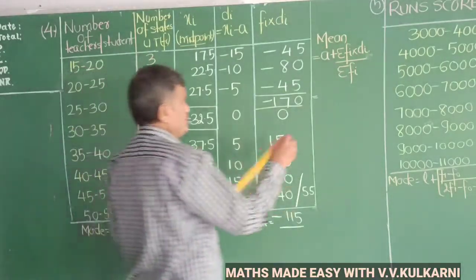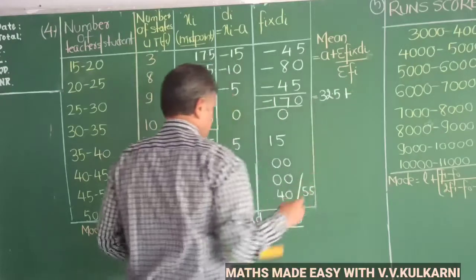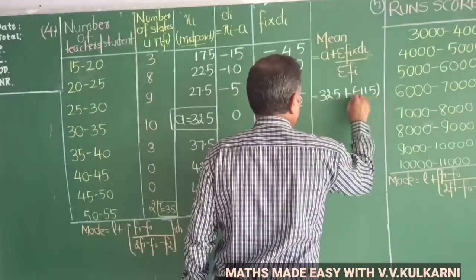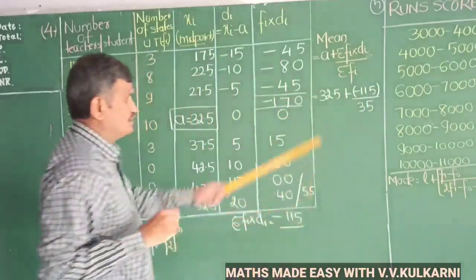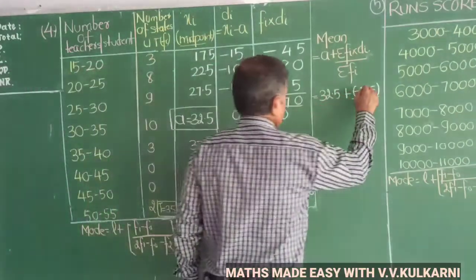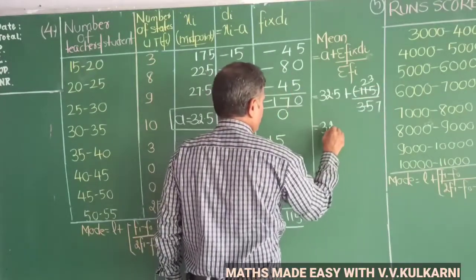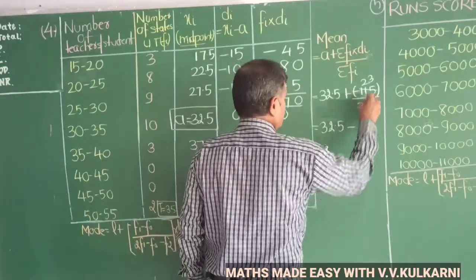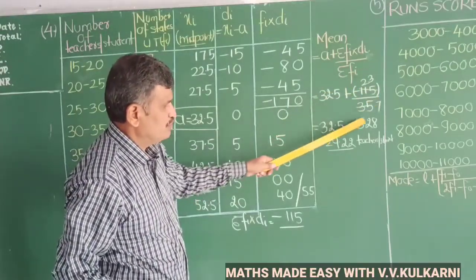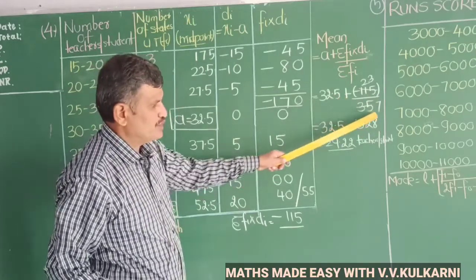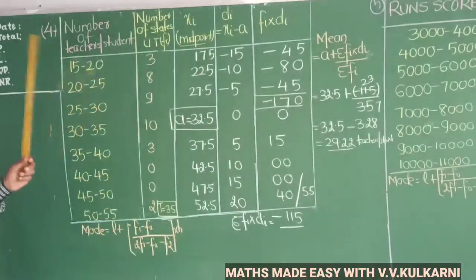To find the mean using the assumed mean method: Mean = assumed mean + (Σfi·di / Σfi). That is 32.5 plus (minus 115 divided by 35). The total frequency is 35. Simplifying: minus 115 divided by 35 equals minus 23 divided by 7, which is approximately minus 3.28. So the mean is 32.5 minus 3.28, which equals approximately 29.22 teachers per student.